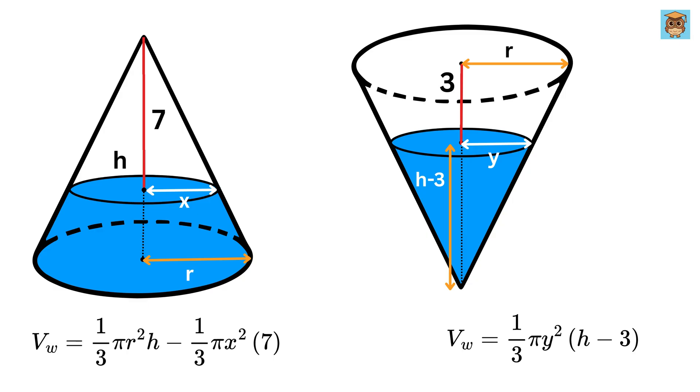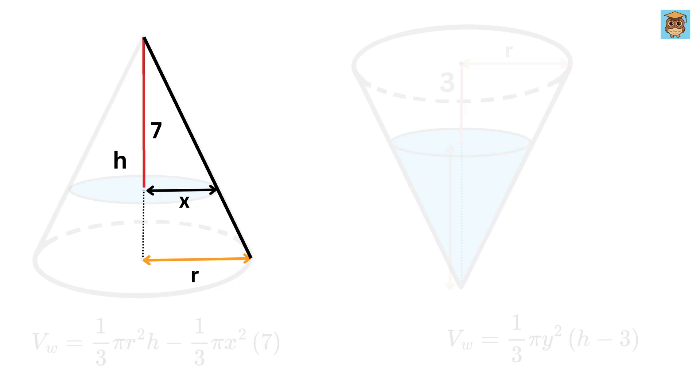Now here comes the real magic. Consider both these triangles, this smaller one and this bigger one. Let this angle be theta. Since both triangles are right-angled and share the same angle theta, the two triangles are similar.